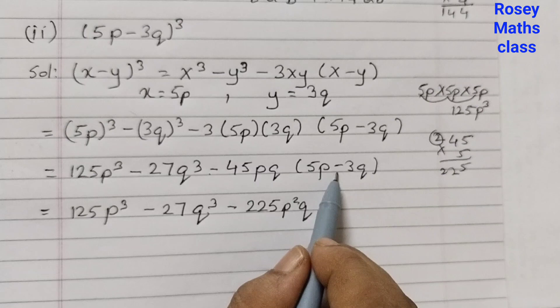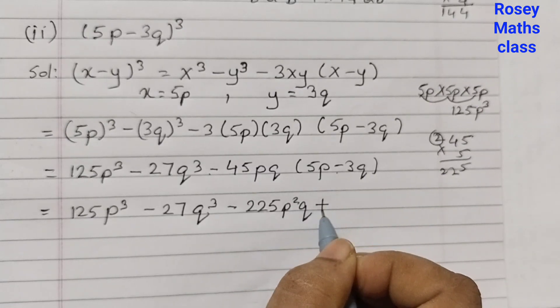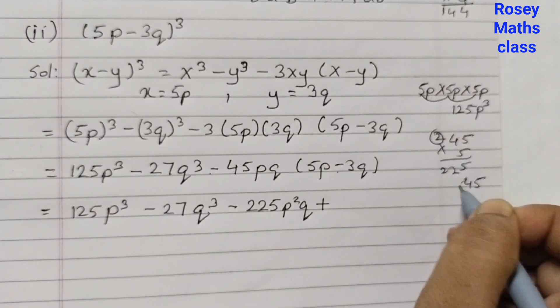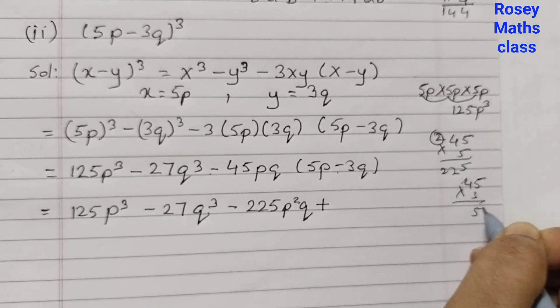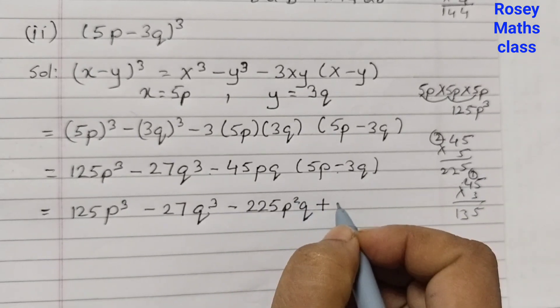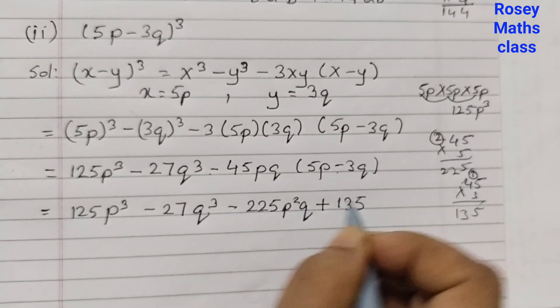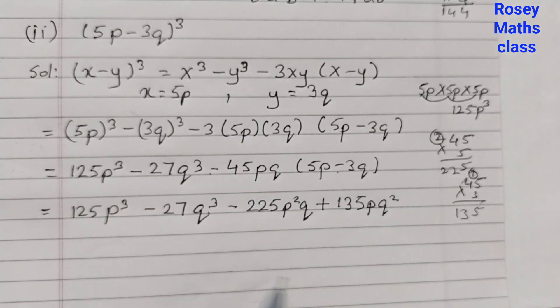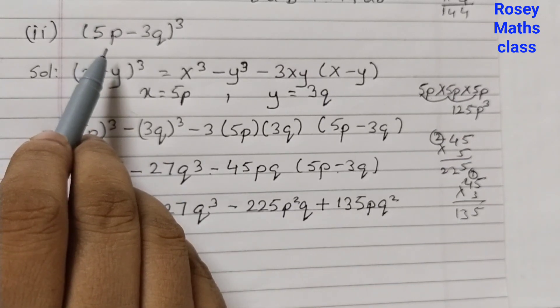Minus into minus becomes plus. 45 into 3: 5 times 3 is 15, 4 times 3 is 12, so 135pq². So this is the expanded form of this given expression.